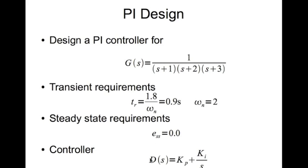The controller is obviously of this form. The transfer function for the controller D of s is Kp plus Ki divided by s. You can also write it by cross multiplying s, as Kp times s plus Ki divided by s.